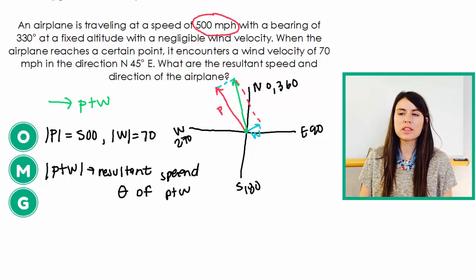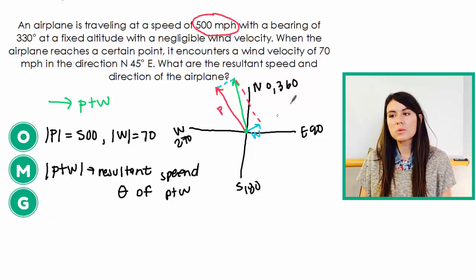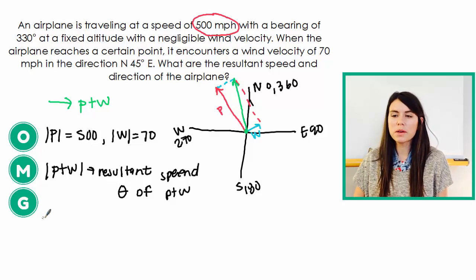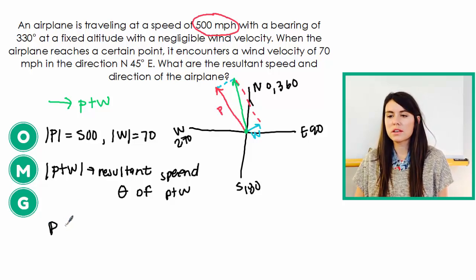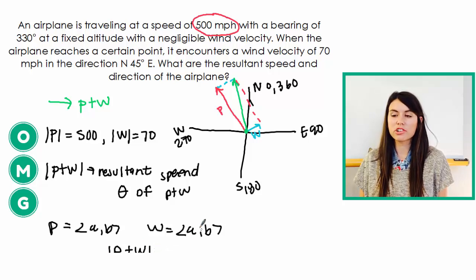And then our game plan for doing this is going to be to do a couple things. Unfortunately, we don't have P or W. We don't have their component form. So we need to find what is P in its component form, so that's the AB form. What's W in its component form. Then we need to add them together.